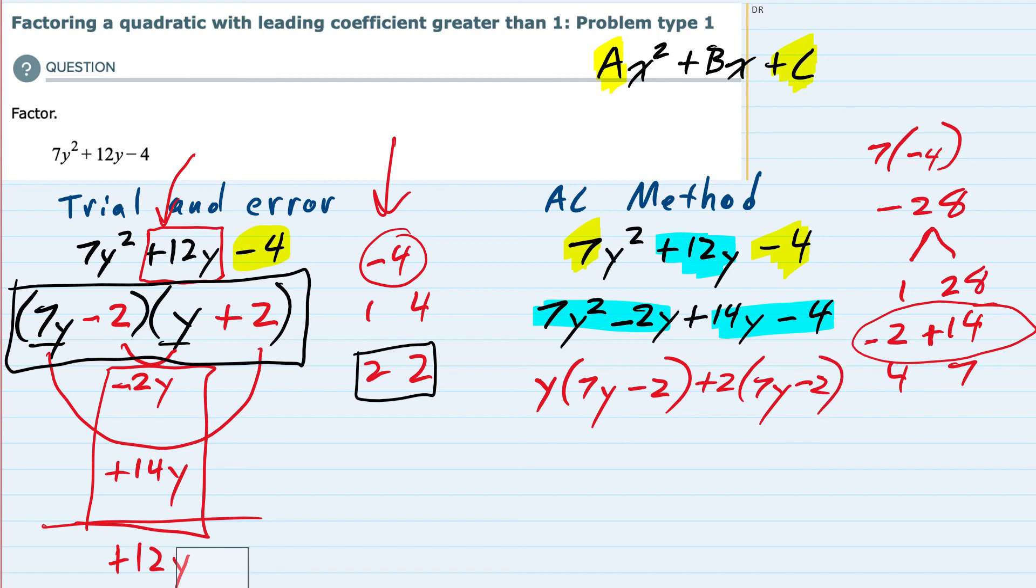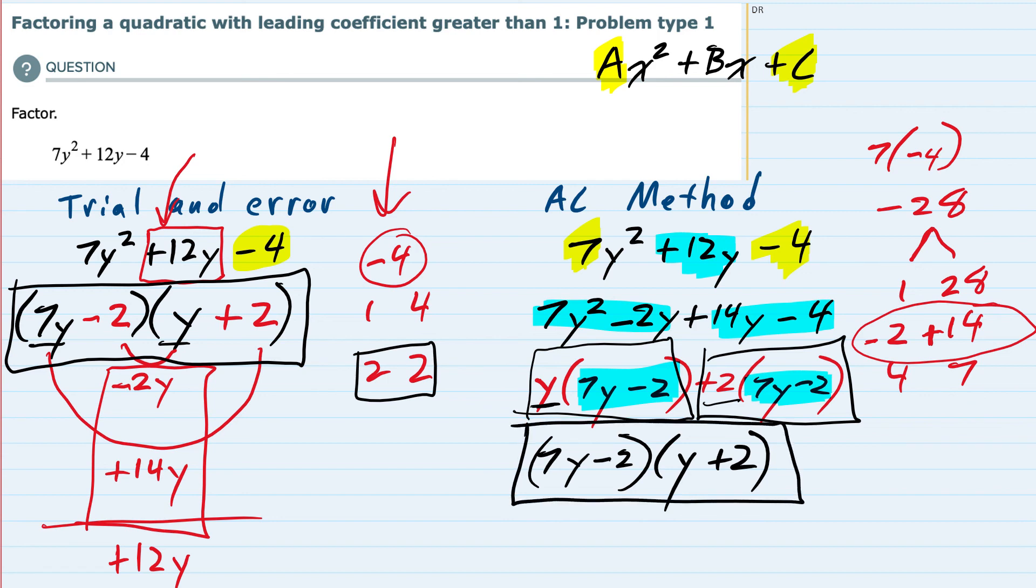If I've done this correctly, the AC method, I should always have the same expression that is in both of these two terms now. Since they both have a 7y - 2, that means that I can factor out the 7y - 2. From this first term, I would have the y left. And if I factored out the 7y - 2 from the second term, then I would have the +2 left. You can see that by both methods, I ended up with the same expression: 7y - 2 times y + 2.